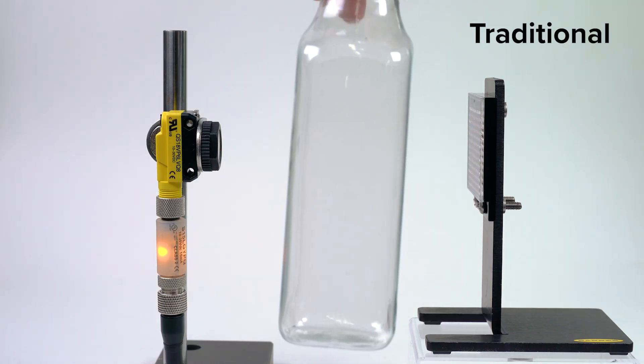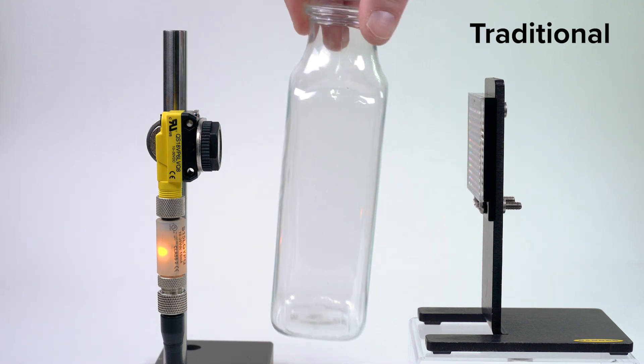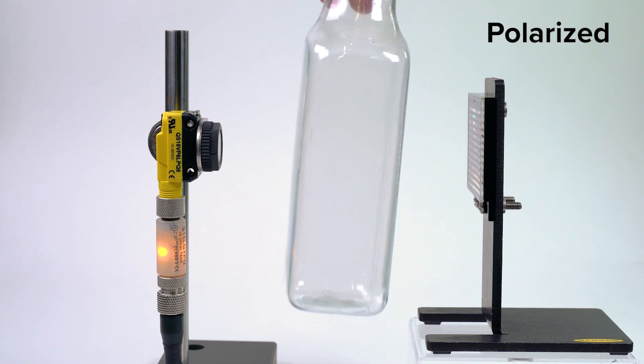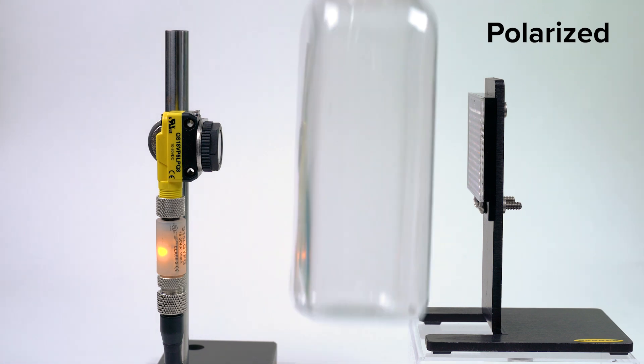Some applications require the ability to detect clear objects. The light from both the traditional and polarized retro reflective sensors will often see through these objects, making them less reliable for this type of application.